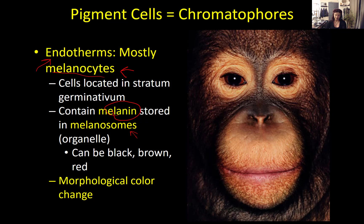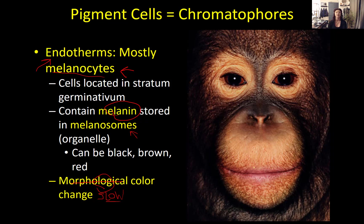Melanin and melanocytes contribute to what's called morphological color change, which is slow and happens over the lifetime of an animal. For example, when your skin starts out pale in winter and you're exposed to the sun over time, you get a tan — your skin darkens. But it doesn't happen immediately. Getting a tan takes days and weeks of sun exposure because your body slowly builds up more and more melanin in your melanocytes. That's morphological color change — it's slow.